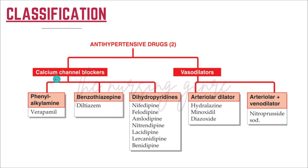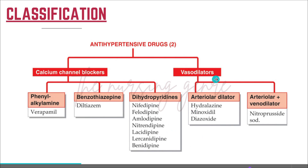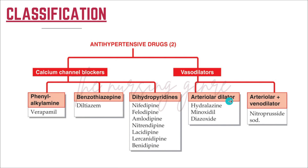The fourth subclass is calcium channel blockers: phenylalkylamines such as verapamil, benzothiazepines such as diltiazem, and dihydropyridines such as nifedipine, felodipine, and amlodipine. The fifth subclass is vasodilators: arteriolar dilators — hydralazine, minoxidil, diazoxide — and arteriolar plus venodilator: sodium nitroprusside.